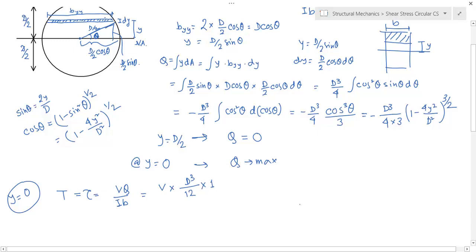Putting y equals zero, D³/I. For a circular cross section, this I equals π D⁴/64, into B.